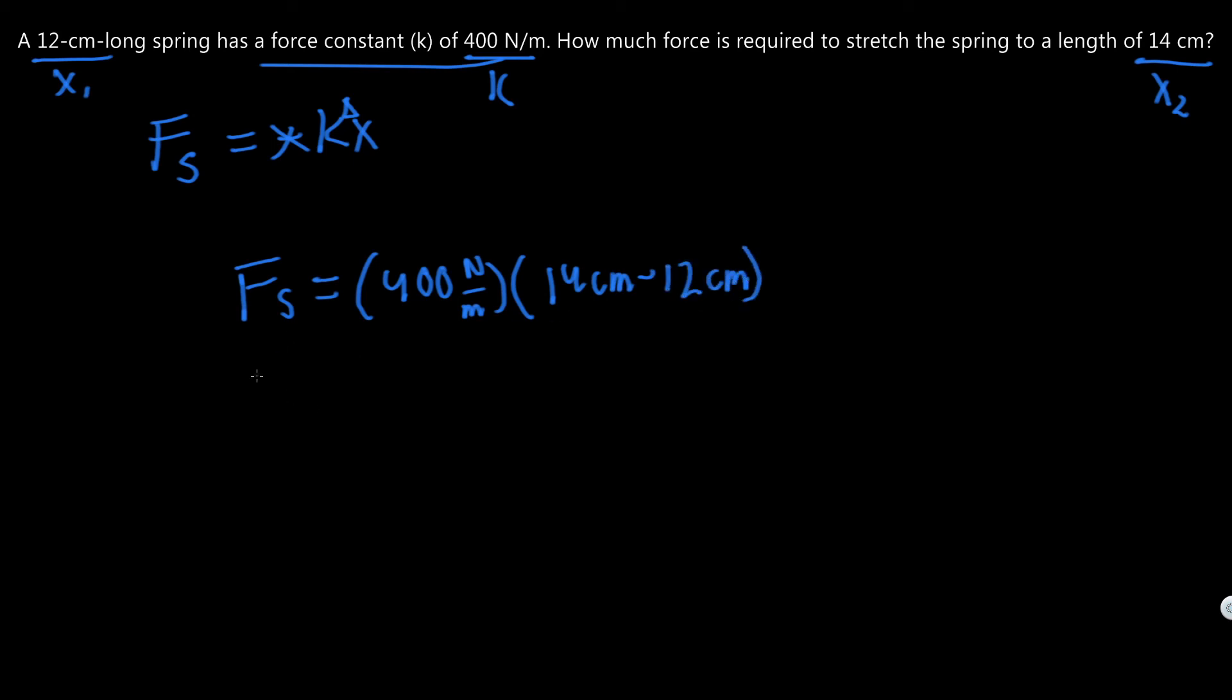Let's just simplify that. F_s equals 400 times 2 centimeters, which is just 0.02 meters.